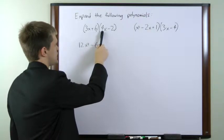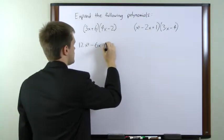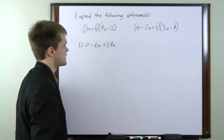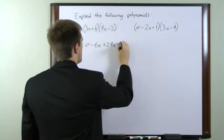The inside pair, 6 times 4x, gives us 24x. And the last pair, 6 times negative 2, gives us minus 12.